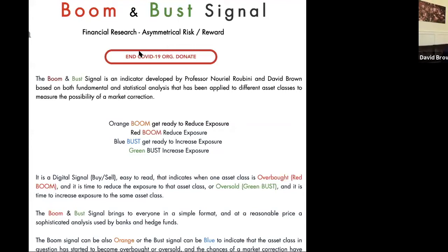In addition, there was the uncertainty of COVID-19's spread in the US, plus the oil crisis because of Putin not agreeing with the Saudis on a reduction of production. So we had maybe two or three black swans all together at the same time. Although the market rallied about 7% after our green bust at 2,550, we decided to downgrade the signal to blue bust because of this uncertainty. After a 37% correction, the market is oversold — so there is no red boom. It's a green bust or a blue bust.